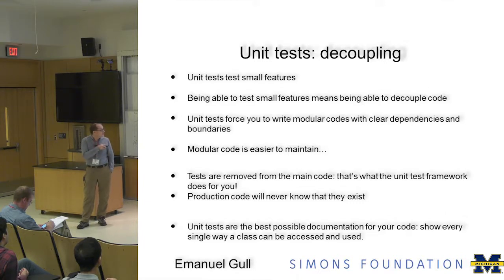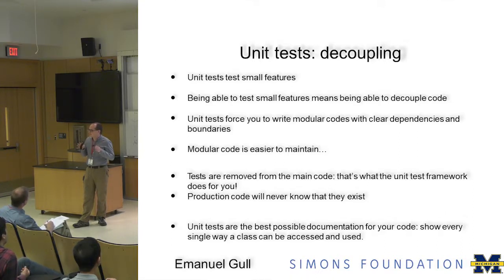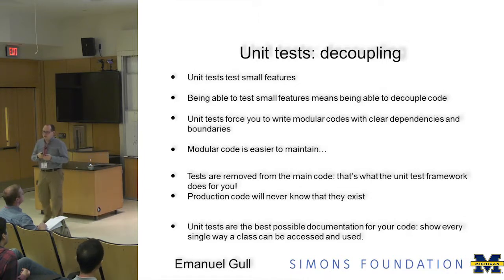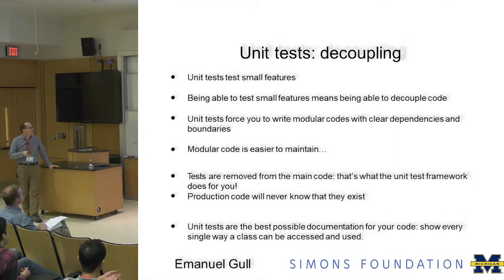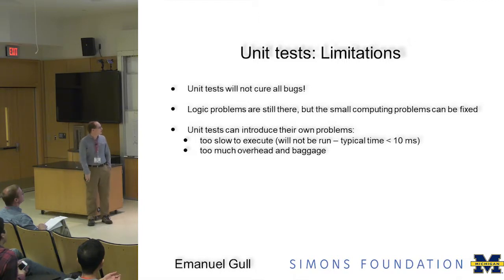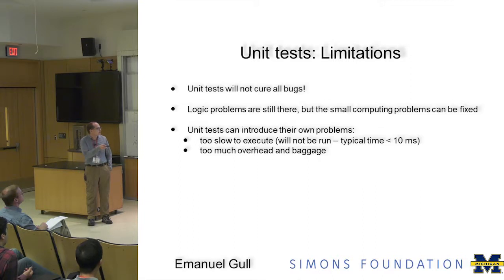If somebody else works on that code, or if it's you yourself coming back two years later, the unit tests are your best possible documentation — they document every single function, tell you exactly how you intended to call it, what the variables were, what the boundary conditions were, what the test cases were. Of course, unit tests won't cure all bugs — the logic and thinking problems are still there. It's the smaller programming bugs that get eliminated. They can introduce their own problems: if you have a thousand tests that run in 10 milliseconds each, it will take 10 seconds to test your entire code. Ideally you'd like testing to complete in about a second, so you can run tests very, very often.